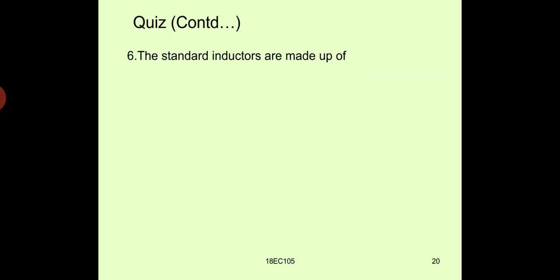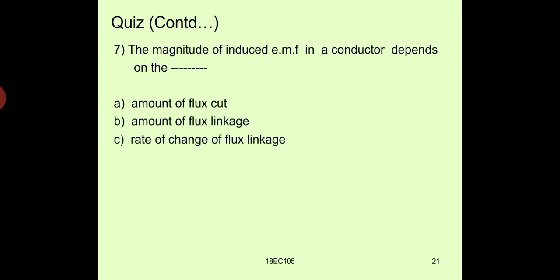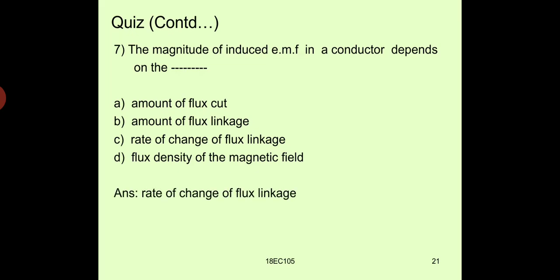Next question: the standard inductors are made up of — manganese, copper, steel, or aluminum? We are referring to the coil material, so the answer is copper. The magnitude of the induced EMF in a conductor depends upon — amount of flux cut, amount of flux linkages, rate of change of flux linkage, or flux density of the magnetic field? The answer is rate of change of flux linkage.